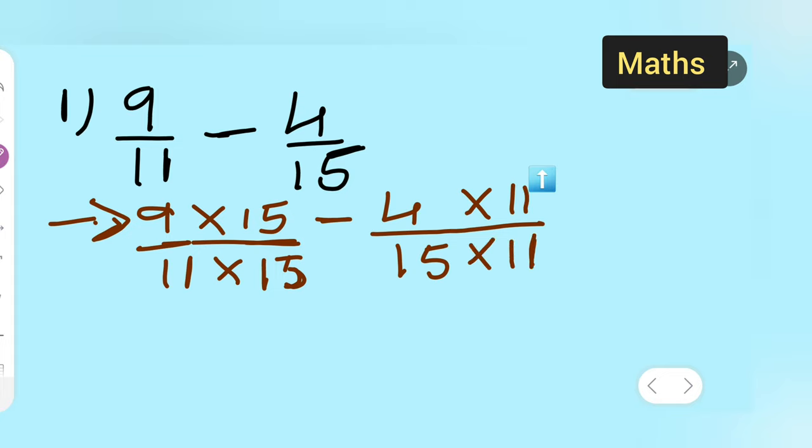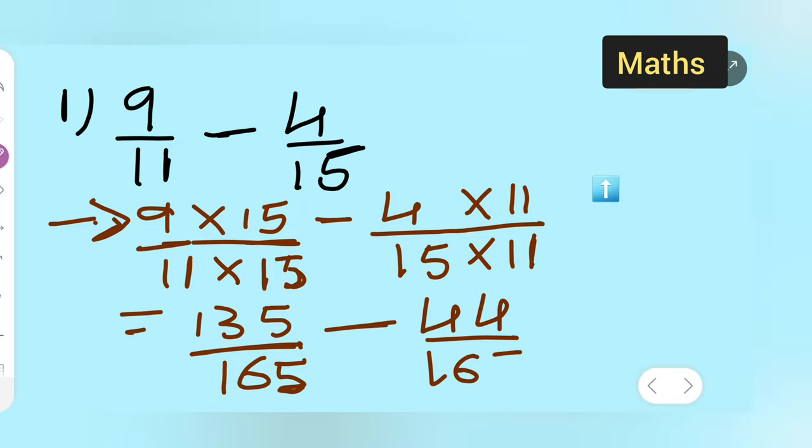So basically your answer will be what? 9 times 15 is going to give you, 9 15s are 135. So your answer is 135 upon 165. 11 times 15 are 165. You all have to know the table so that you can do it easily very fast. 4 times 11 are 44 upon 165.